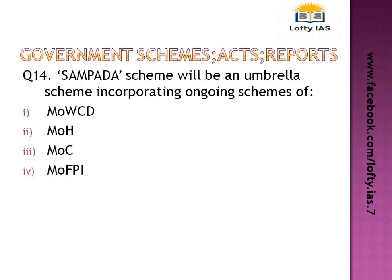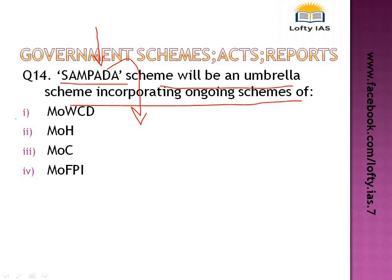Question 14: the Sampada scheme. Go back home, read about it, and write what the full form is in the comments. This scheme is related to processing industries and will be an umbrella scheme under the Ministry of Food Processing Industries — not the Ministry of Women and Child Development or Ministry of Health. It will incorporate ongoing schemes like the MIGGA Food Buyer Scheme and Cold Chain Schemes. It is expected to generate significant employment and revenue and help farmers double their income.